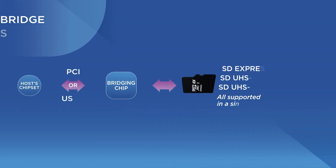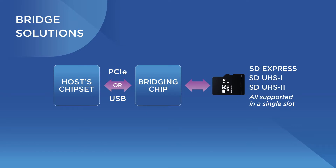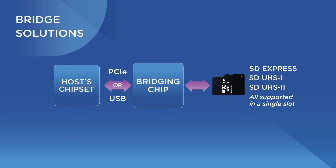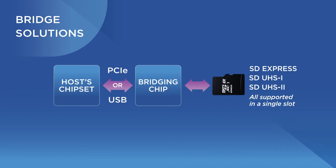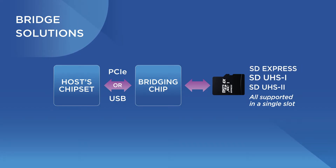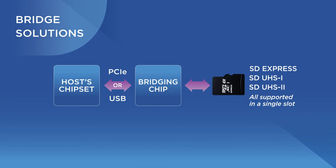First, we will highlight a few available bridge solutions. Bridge solutions allow product manufacturers to add a chip that will deliver SD Express capability to a device through the device's existing PCIe or USB interface. Some of the available bridges may support SD Express, SD UHS-1, and SD UHS-2 cards through the same slot.